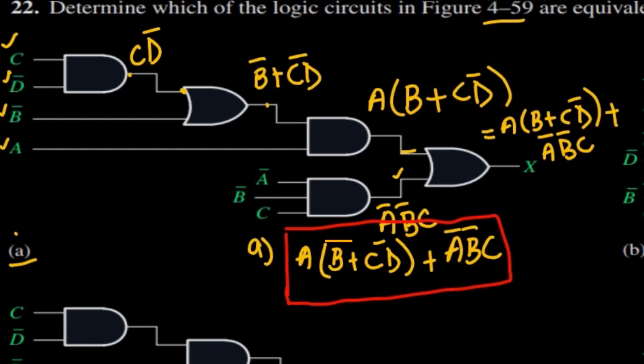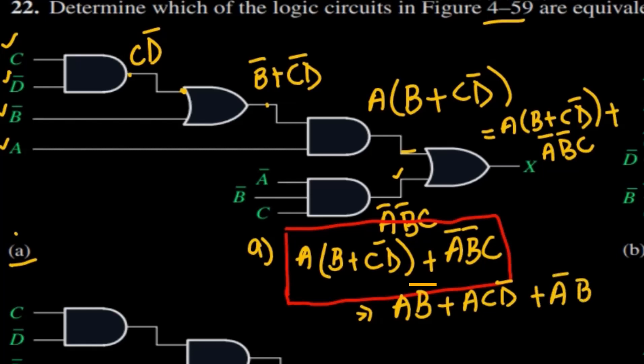Now let's see whether we can further simplify this. Expanding the bracket, we get A·B prime + A·C·D prime + A prime·B prime·C. I don't think we can simplify it further, so this is the final expression for part A.